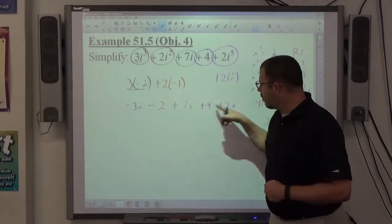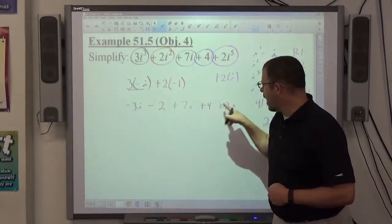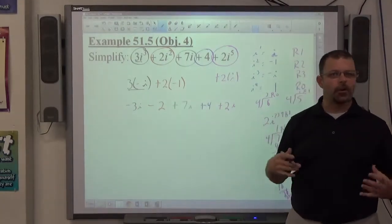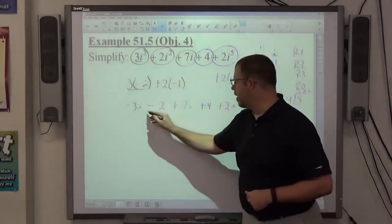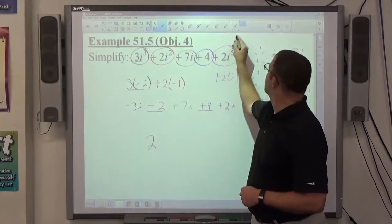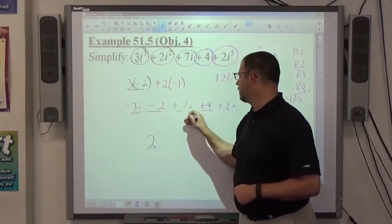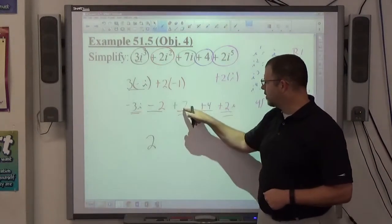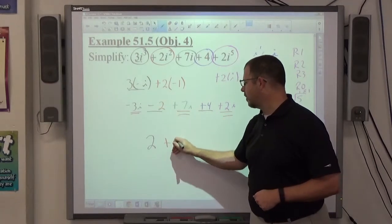So all my stuff's here, either i to the first power or real number. Again, that's where you want to get first. And then once you get i to the first power, real number, real answer first. -2 + 4 is equal to positive 2. Imaginary number is second. 2 + 7 is 9, minus 3 is 6. So plus 6i.